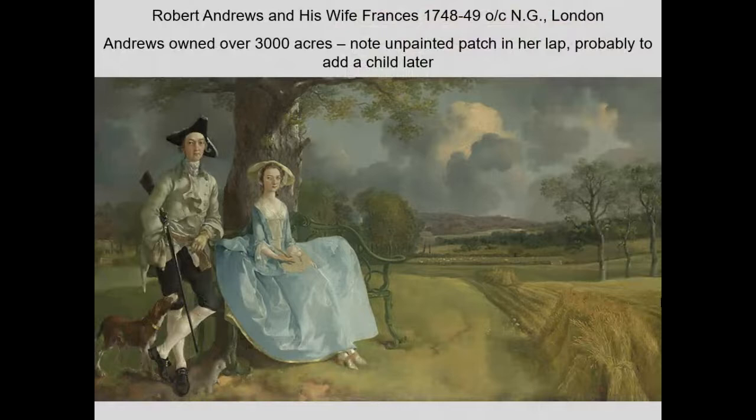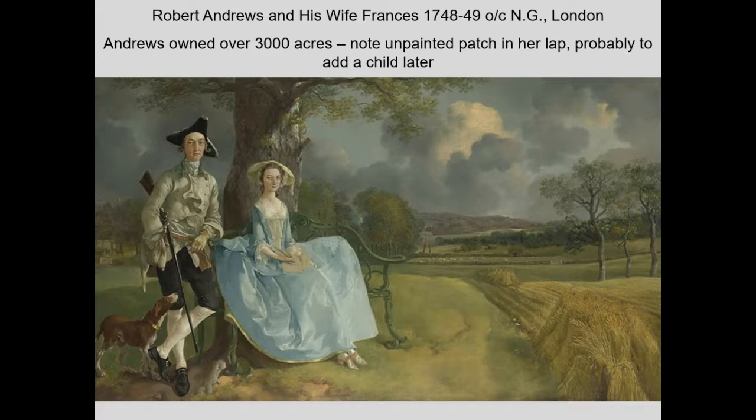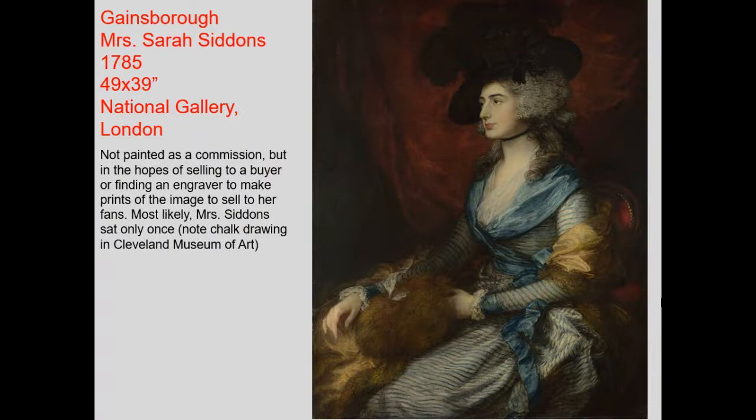One of Gainsborough's most famous works is The Blue Boy, most likely the son of a friend. Another very famous piece is Robert Andrews and His Young Wife — very young, very wealthy landowners. The painting shows an incredible expanse of the property they own. Her lap looks a little damaged because the painting is actually unfinished — it was intended so that once they had a child, the child could be added. Gainsborough's perhaps most famous piece is this portrait of Mrs. Sarah Siddons.